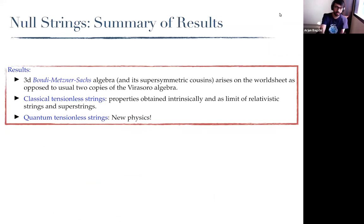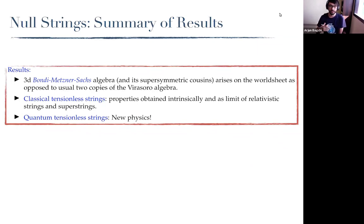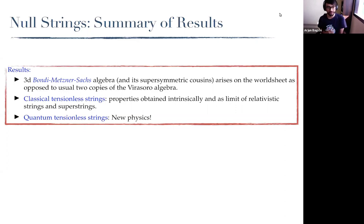The summary of our results, stated very briefly: when we make use of symmetries on the worldsheet, what will appear is the three-dimensional Bondi-Metzner-Sachs algebra. We will not be speaking about supersymmetry. The 3D BMS algebra will arise on the worldsheet of the string, as opposed to two copies of the Virasoro algebra. We will see that classical tensionless strings have properties which we can obtain intrinsically and also as a limit of usual tensile strings. When we move on to quantum mechanical aspects, there is new physics that emerges.